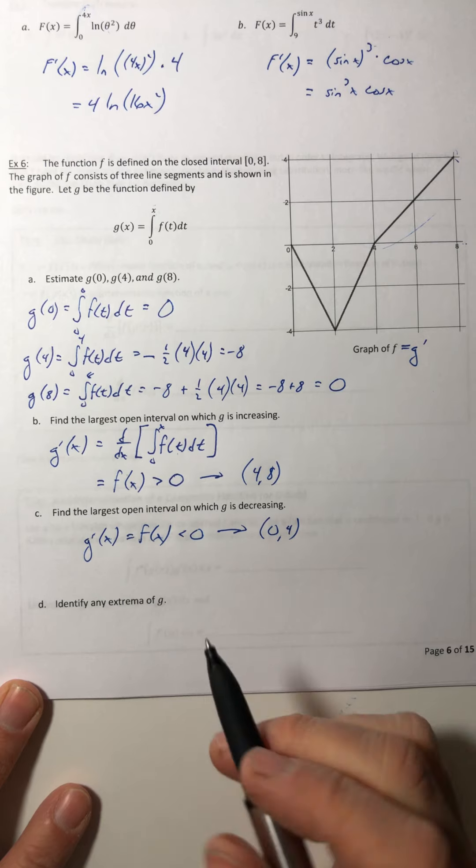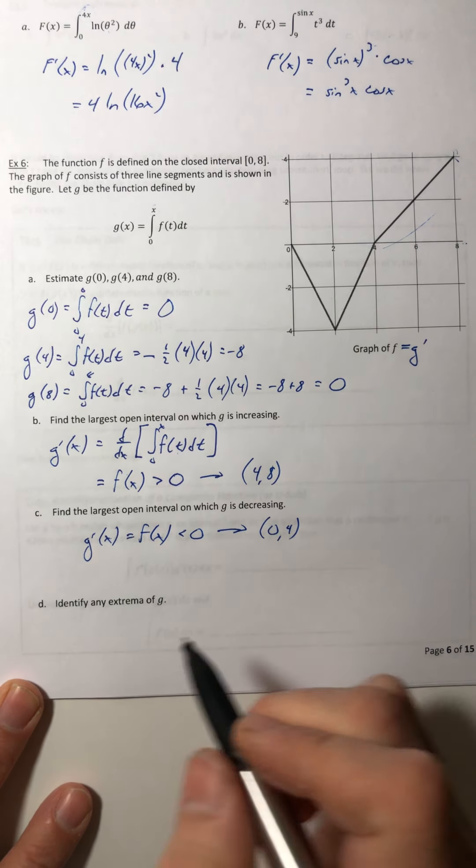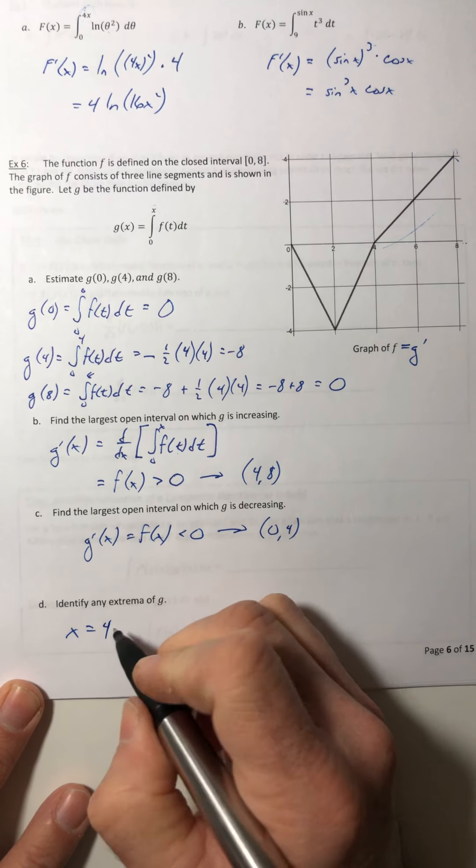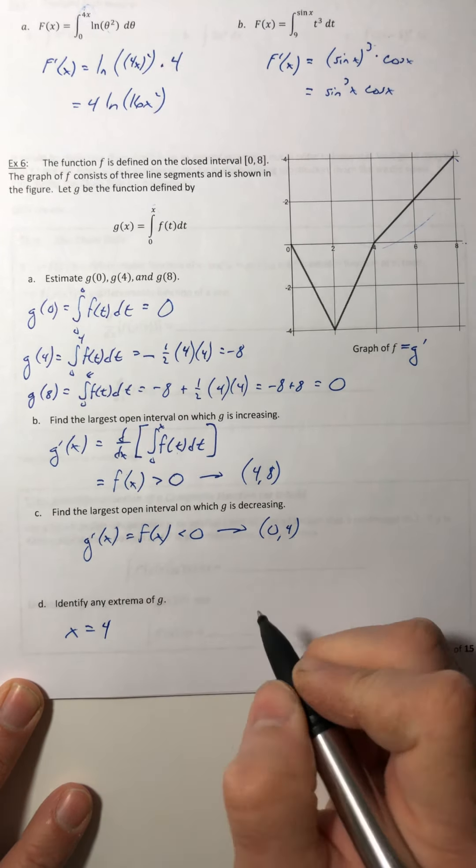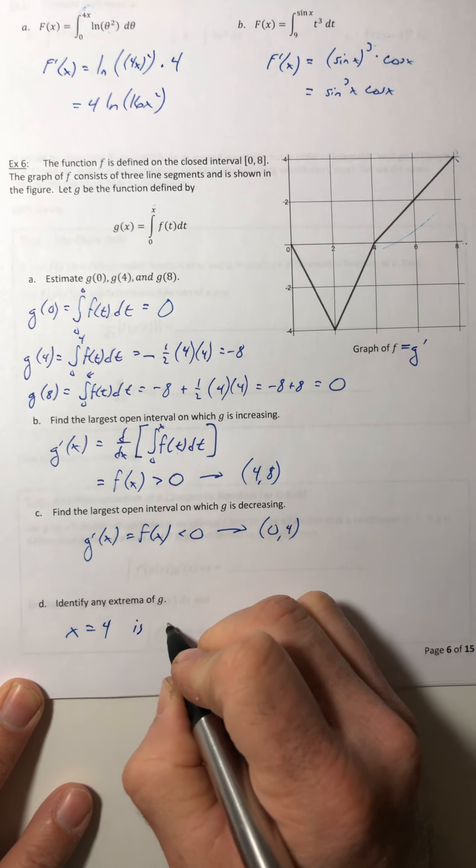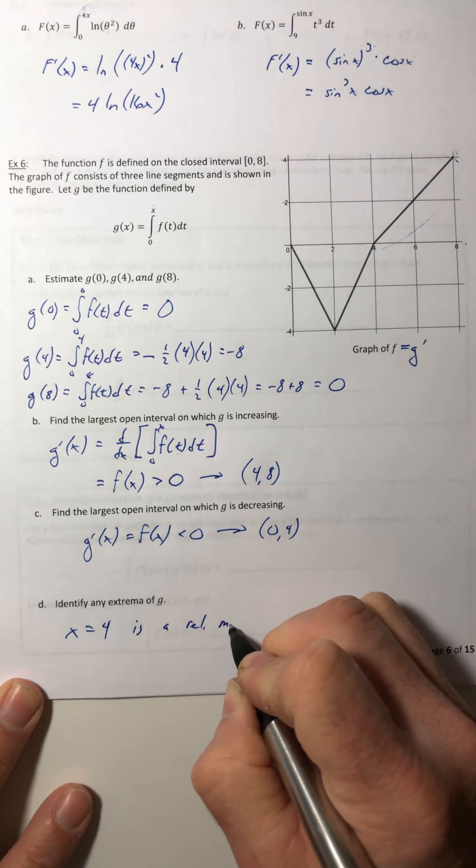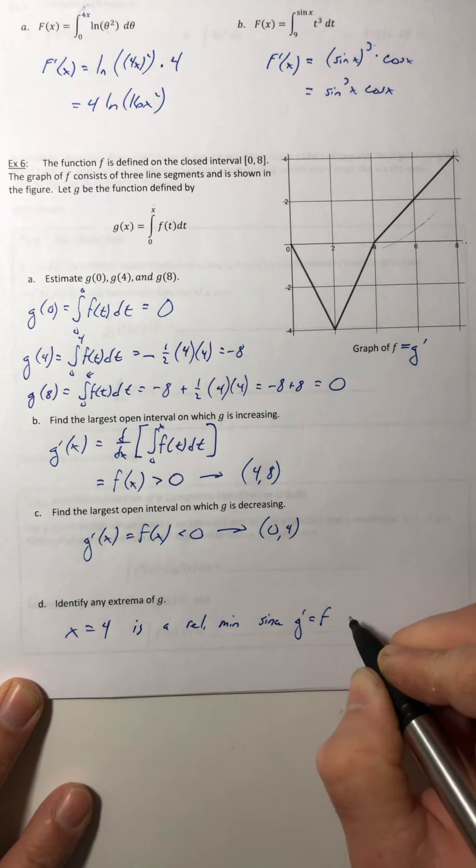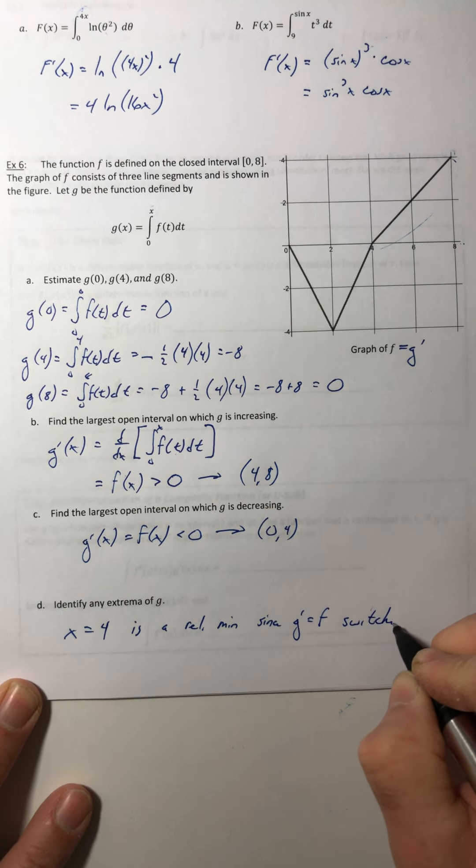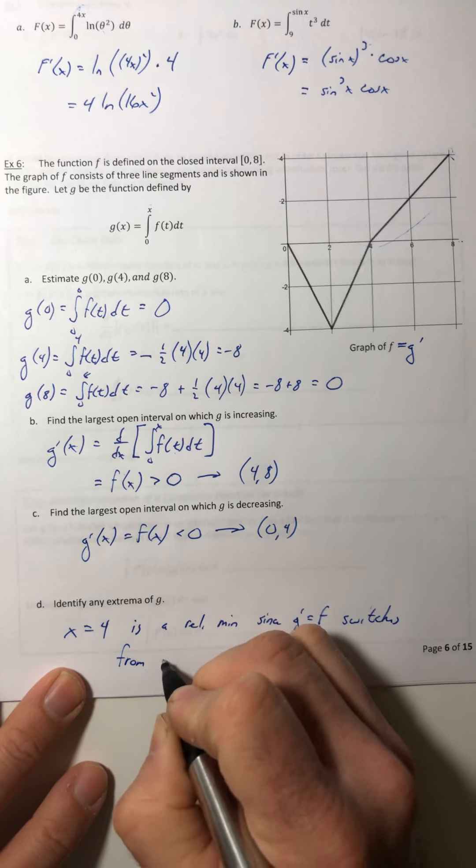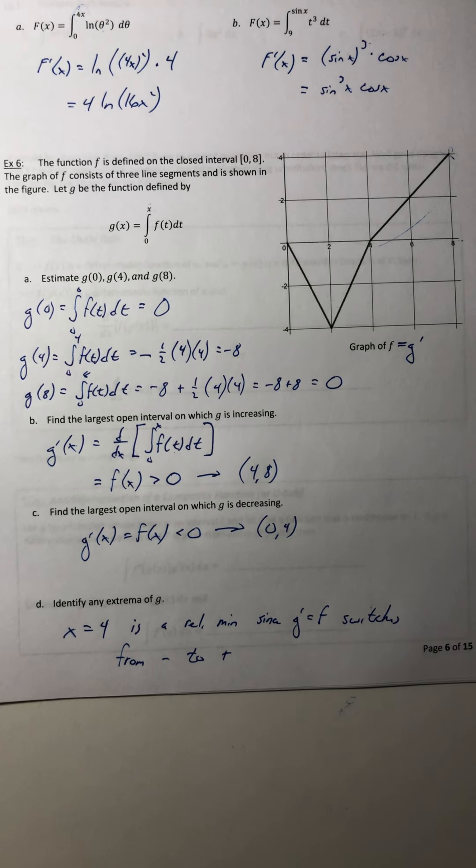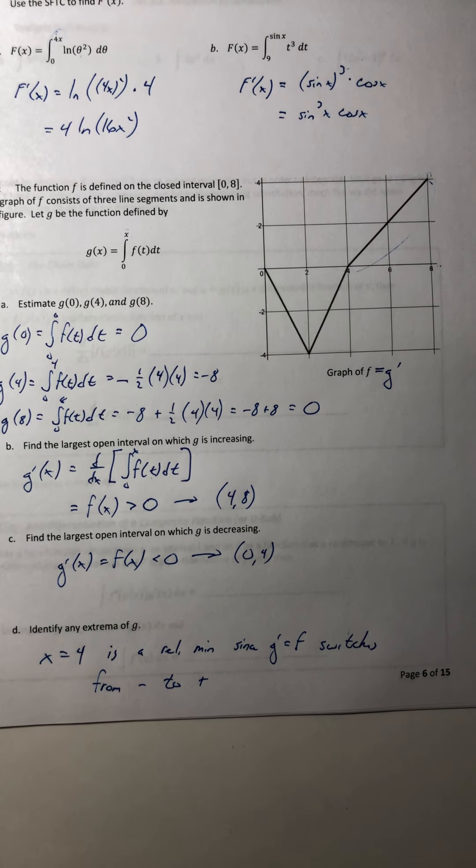And then d, identify any extreme of g. Well, that's when the derivative switches in sign. So we have one at the 4. And it's a relative min, since the derivative, or f, switches from negative to positive.